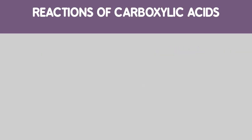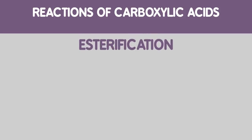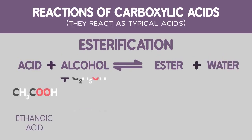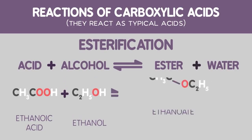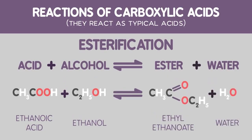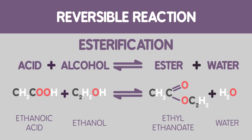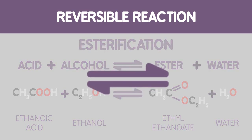Carboxylic acids also give another important reaction called esterification. Here they react with alcohols to give an ester plus water. An example is ethanoic acid and ethanol to ethyl ethanoate and water. This is a reversible reaction, which can be seen from the directions of the two arrows shown.